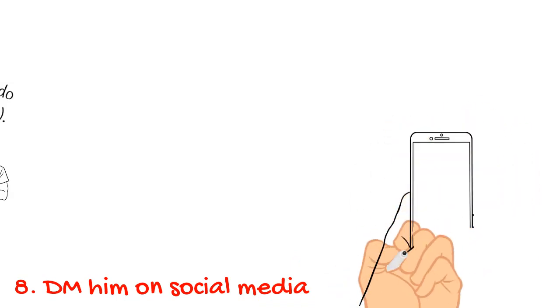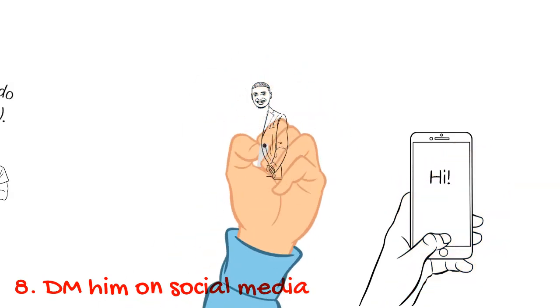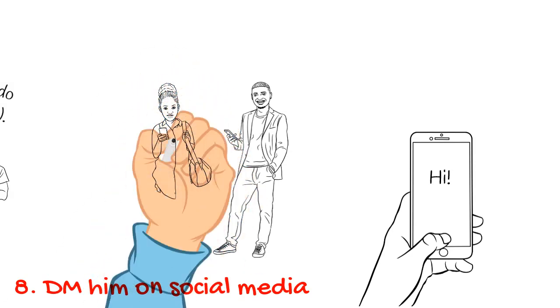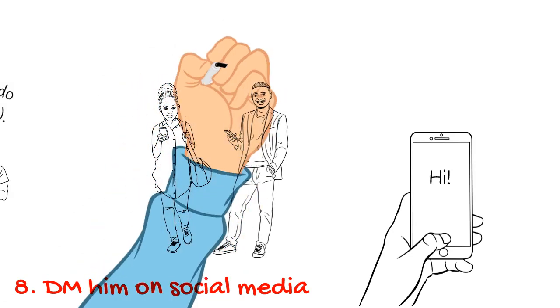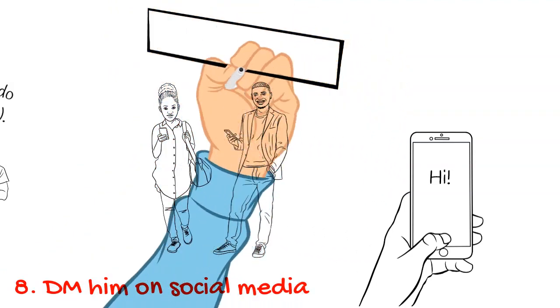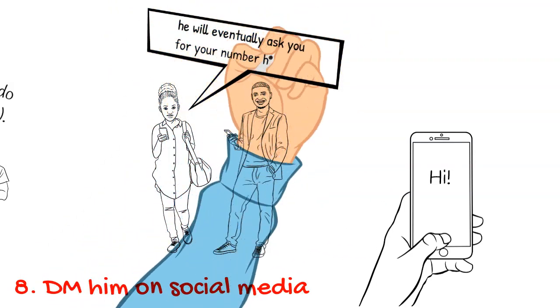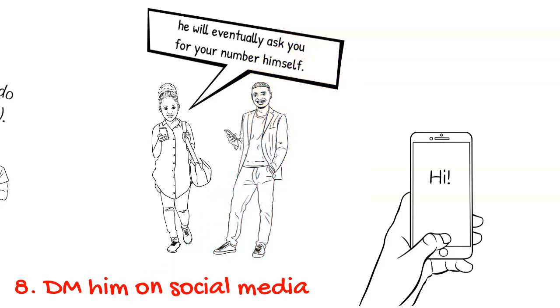Eight: DM him on social media. Ah, social media. When it comes to dating, social media has significantly improved our chances of hooking up with someone in an indirect way, which is far more comfortable to many of us. To get his number, the only thing you need to do is DM him on social media. Make sure that you have a nice, cute profile picture, and as the conversation progresses, he will eventually ask you for your number himself.